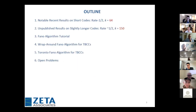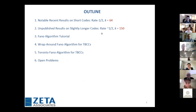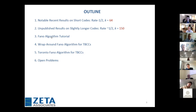Here is the outline of the talk. I'll present two slides on recent results on short codes, in particular for a message block of size 64 and a code rate of exactly one-half. Then I'll provide some context with results on near rate one-half codes with a message block size of 150. I'll also give a Fano algorithm tutorial — I hope I have enough time to fit it all in.